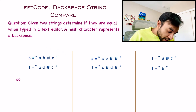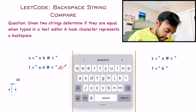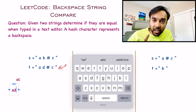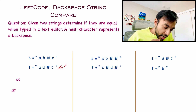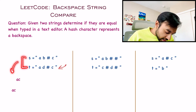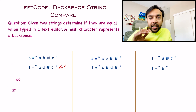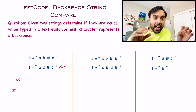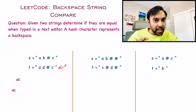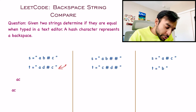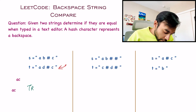Similarly, let us do the same operation for our second string. I have A, then D, then a hash — so do a backspace — and the next character is C. Now both of these strings have translated to AC when typed in a text editor, and since they are the same, I output true as the answer.